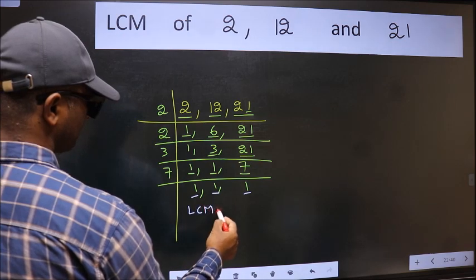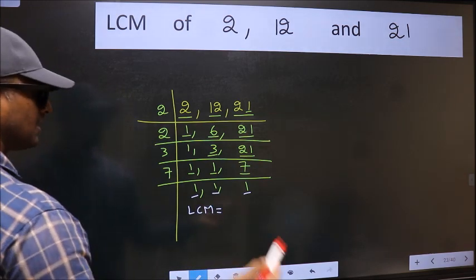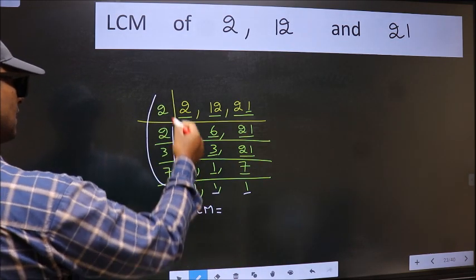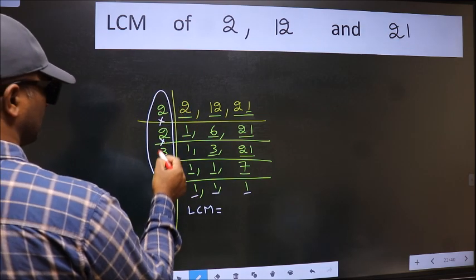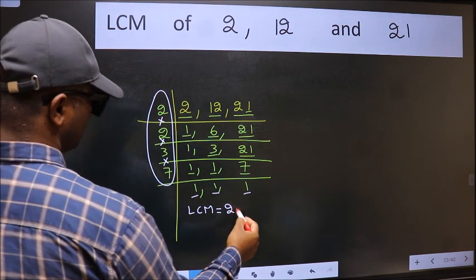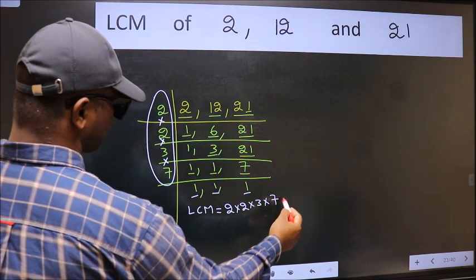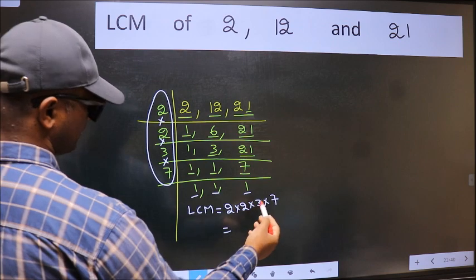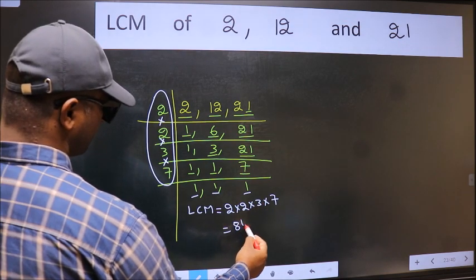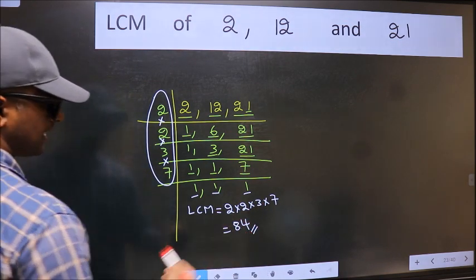So our LCM is, LCM is the product of these numbers. That is 2 into 2 into 3 into 7. When we multiply these numbers, we get 84 is our LCM.